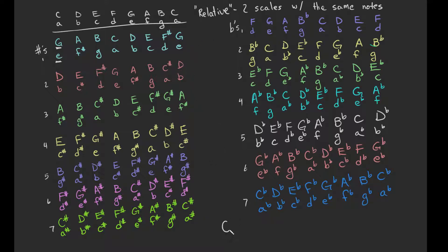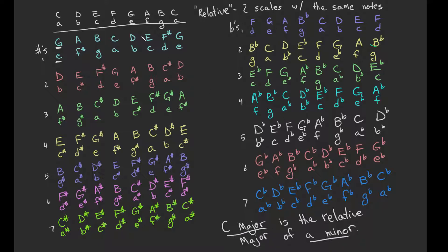Therefore you can say something like: C major is the relative major of A minor, because they have the same notes. You could also say A minor is the relative minor of C major. So they are relatives.